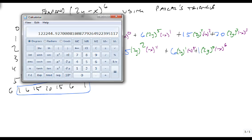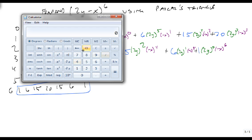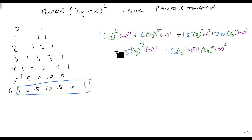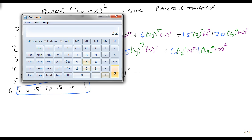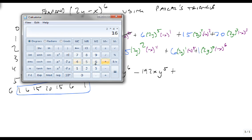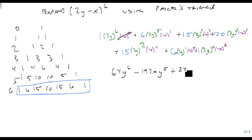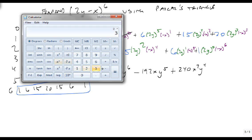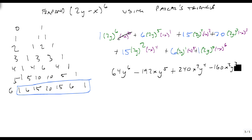Now we just need 2 to the sixth. 2 raised to the sixth power is 64. So we end up with, as our first number, 64y to the sixth, that goes away, minus 32 times 6, because 2 to the fifth is 32, times 6 is minus 192xy to the fifth, plus 2 to the fourth times 15 is 240x squared y to the fourth, plus 2 cubed times 20 is 160 times a minus, so minus 160x cubed y cubed.